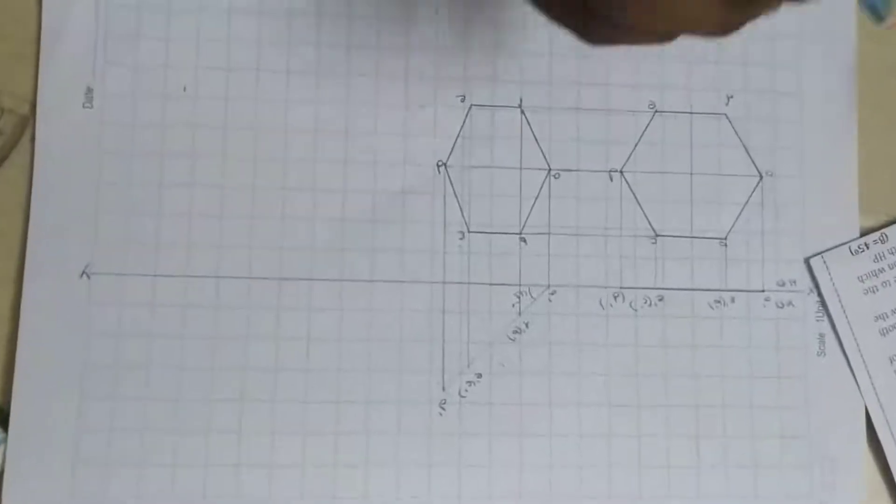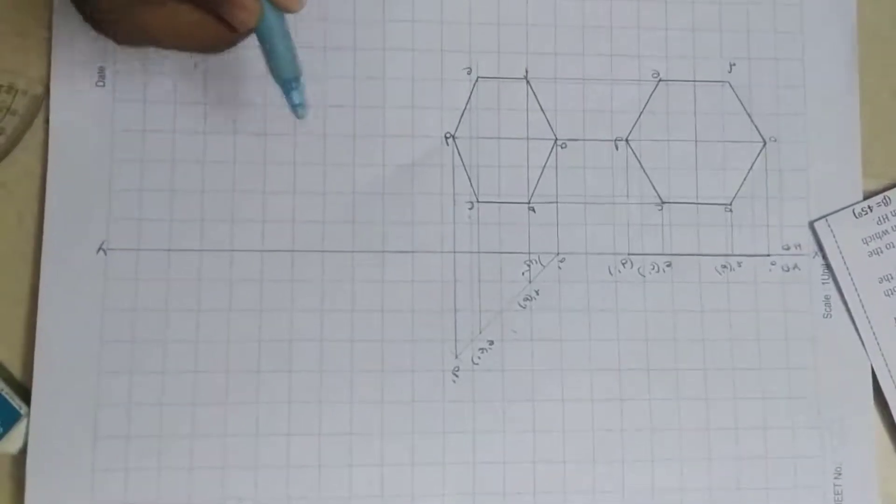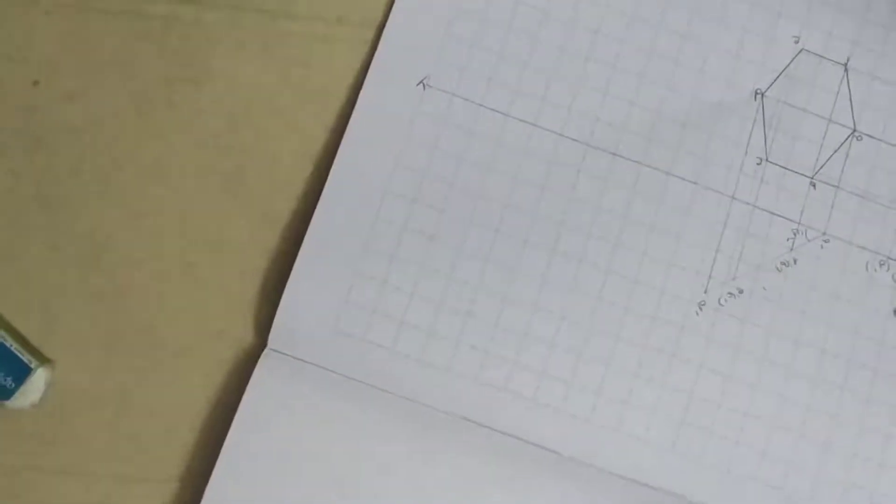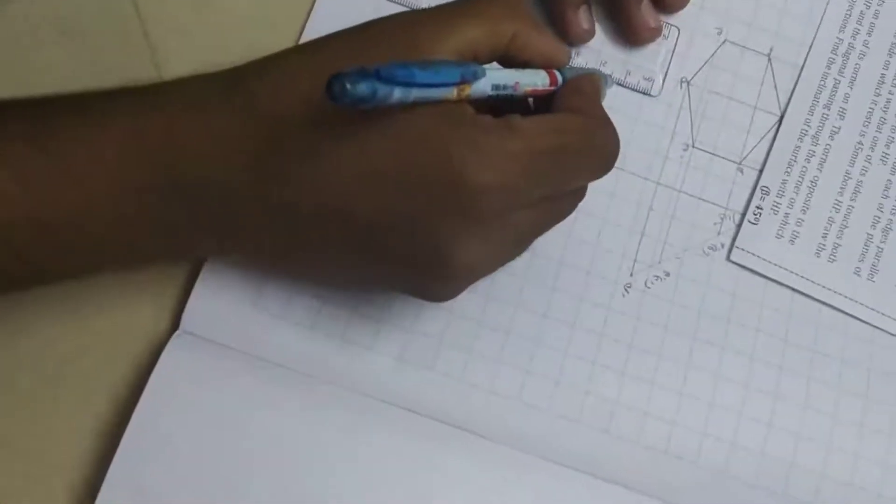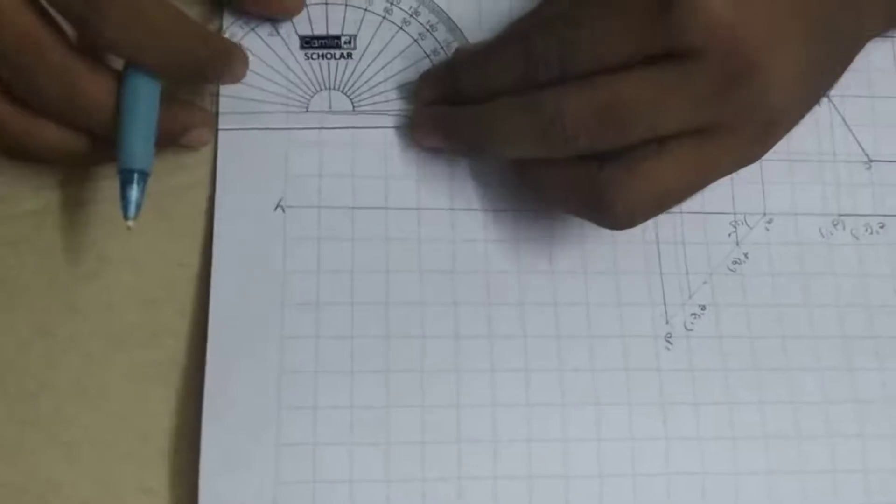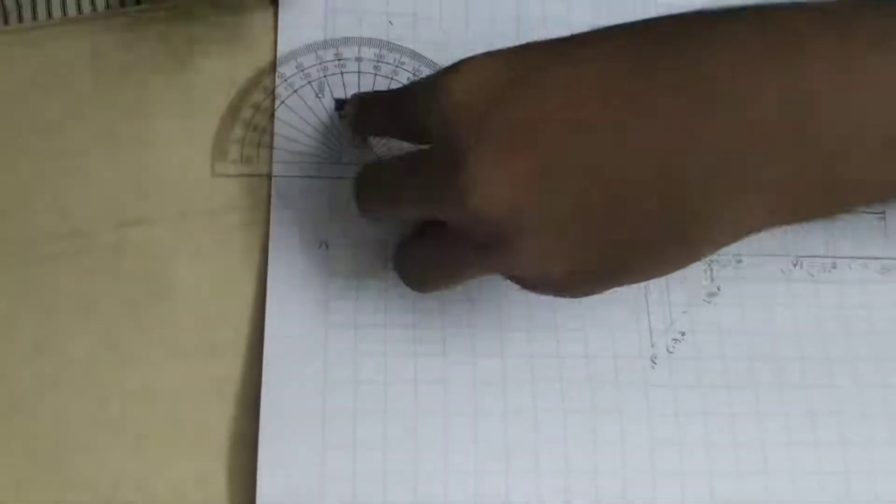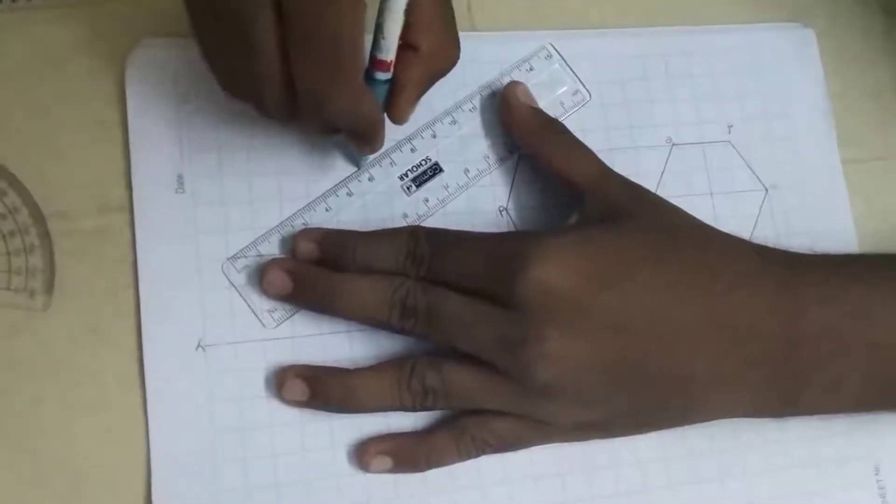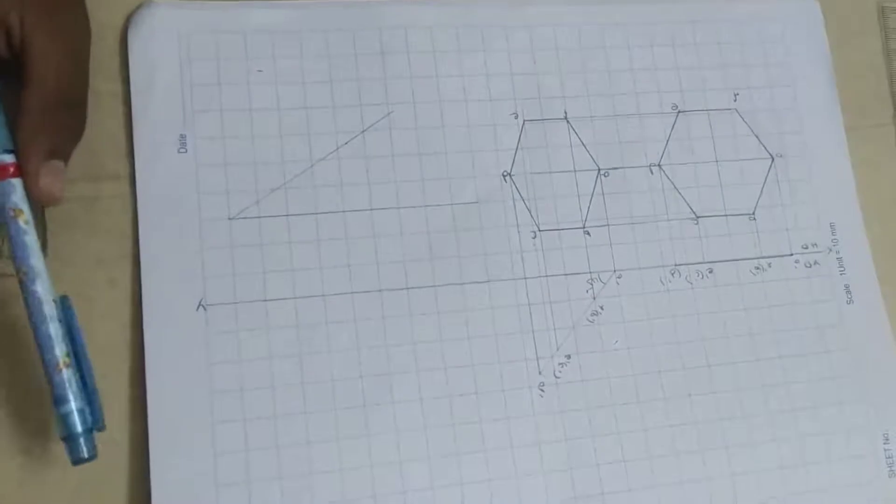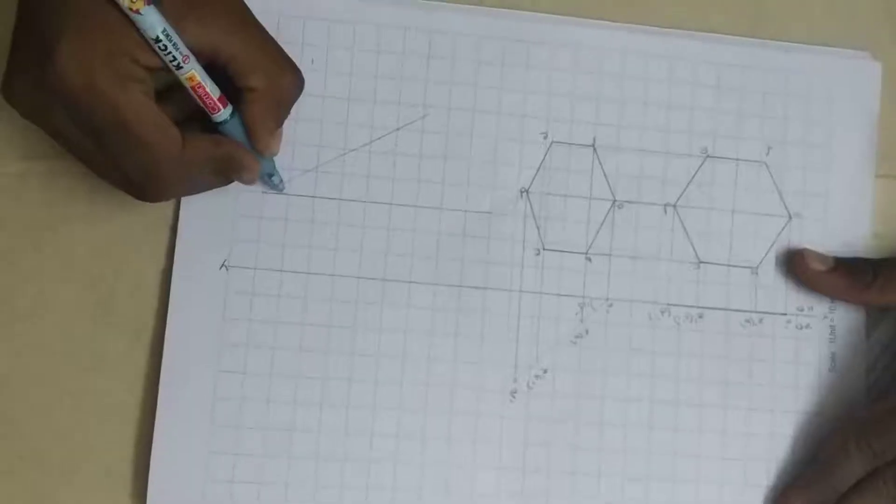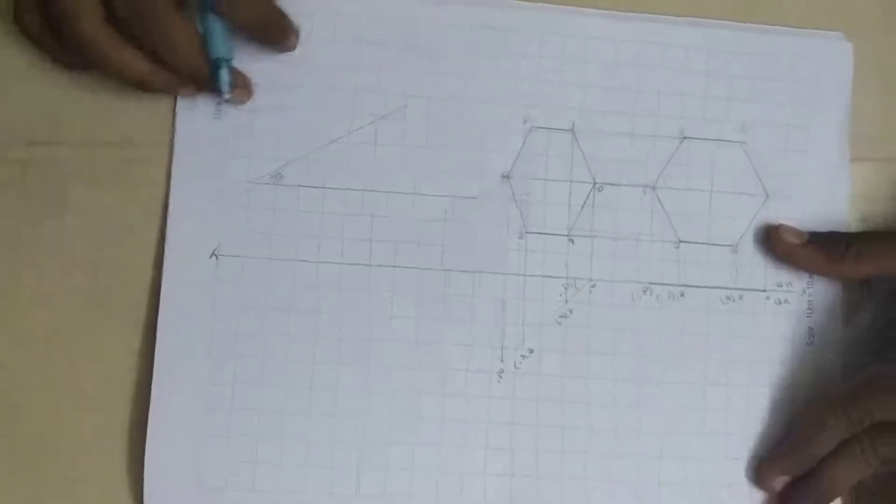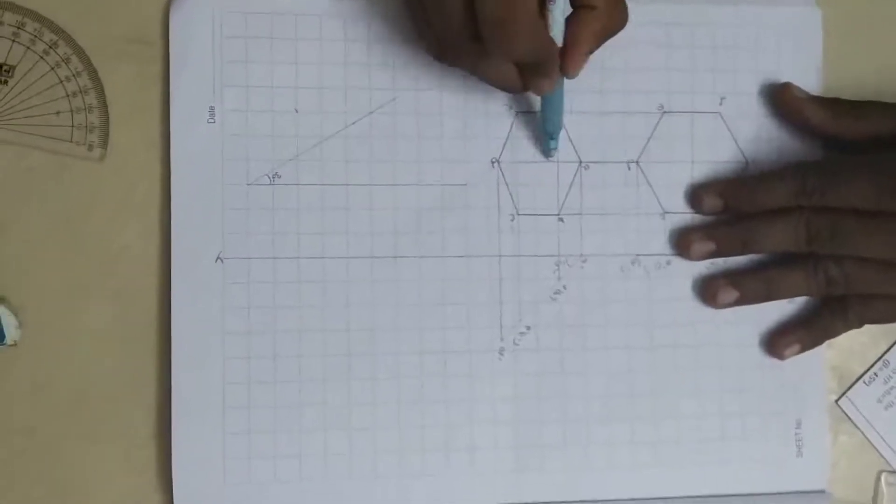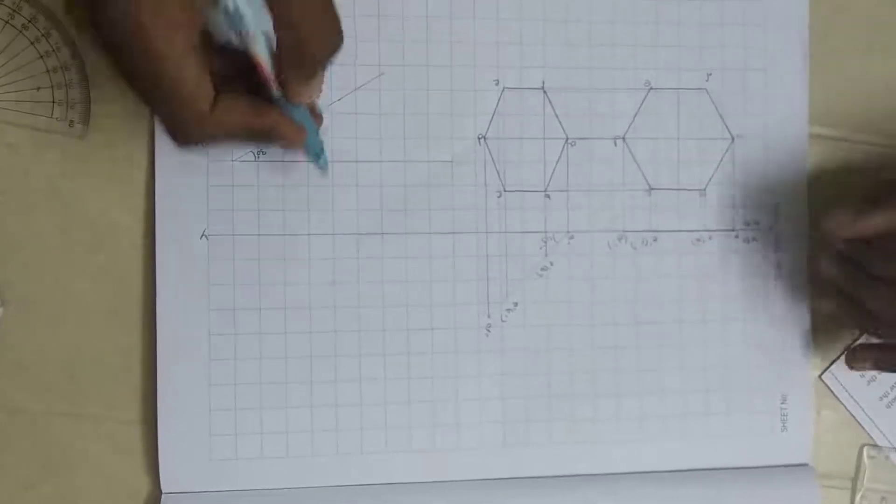And again given that the diagonal through the corner on which it rests appears to be inclined to 30 degrees to VP. So take, draw a reference line first. Here. And take protractor and measure 30 degrees. Now, this is 30 degrees. And given that the diagonal joining the two corners is inclined 30 degrees to VP.